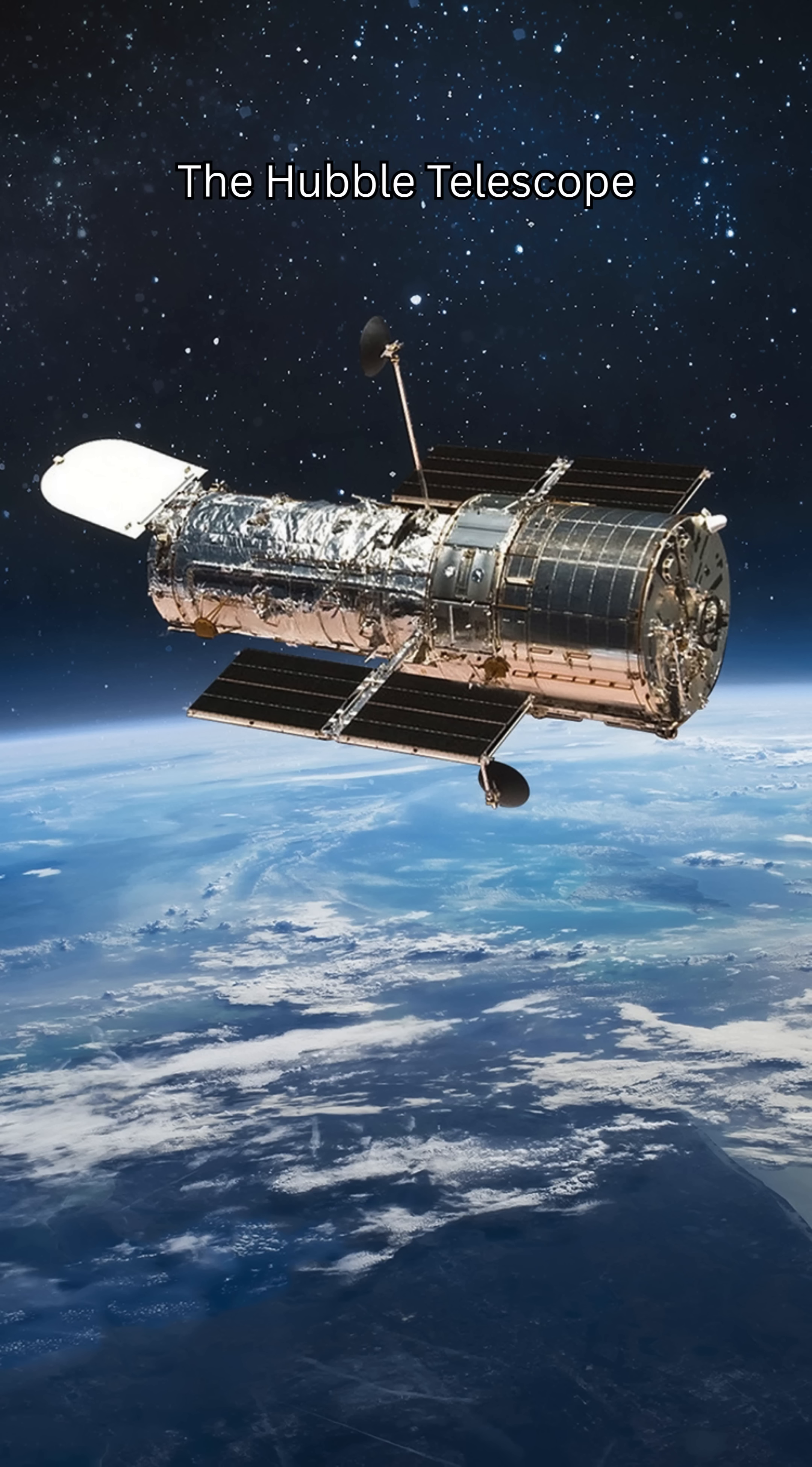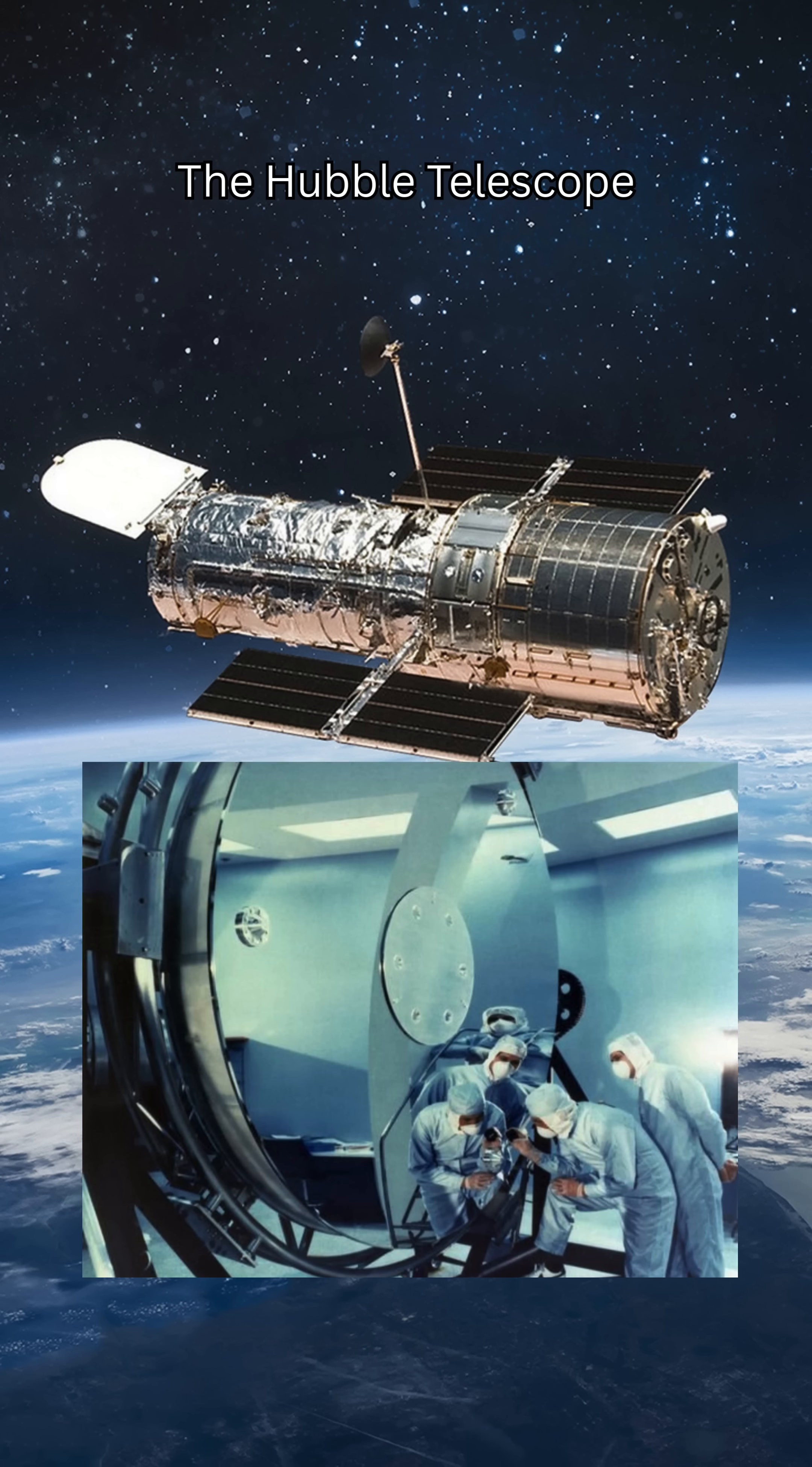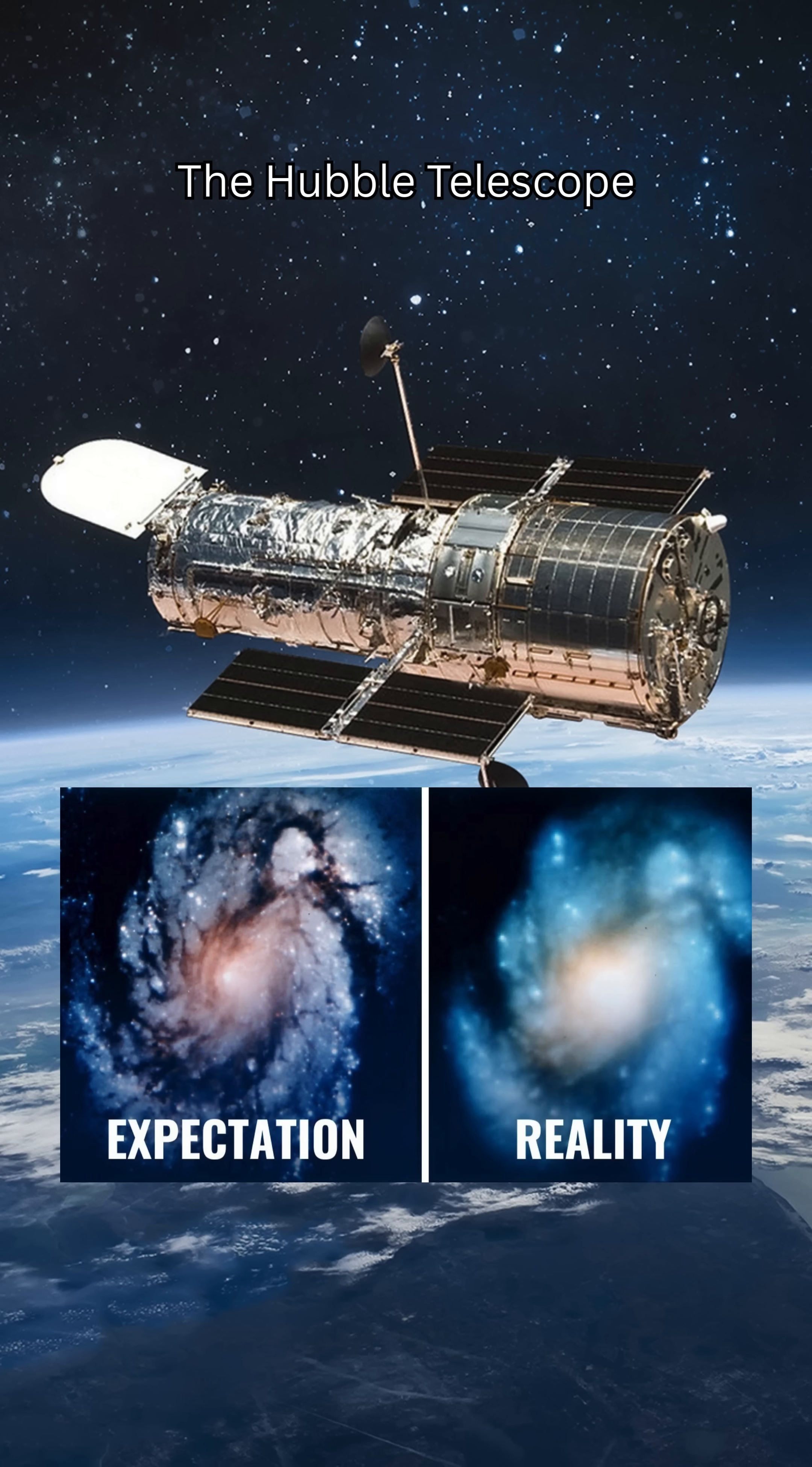When NASA launched Hubble in 1990, it was supposed to be Earth's greatest eye in space. But there was one problem. The mirror was flawed.